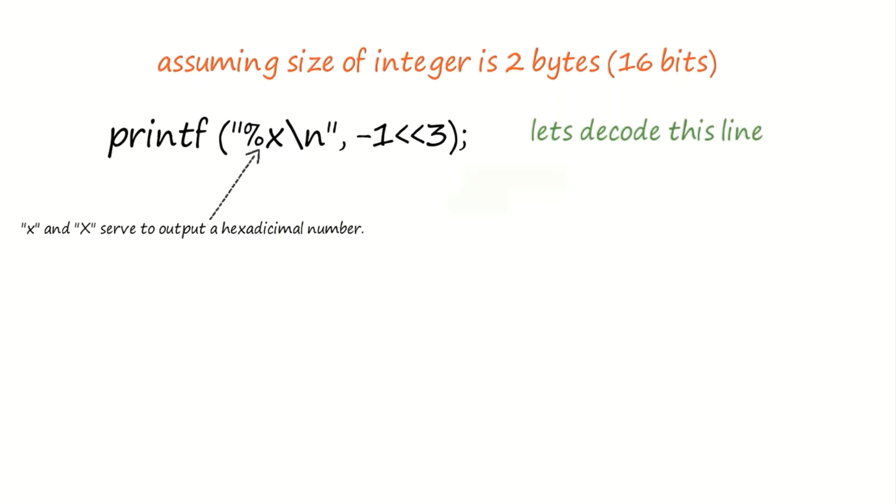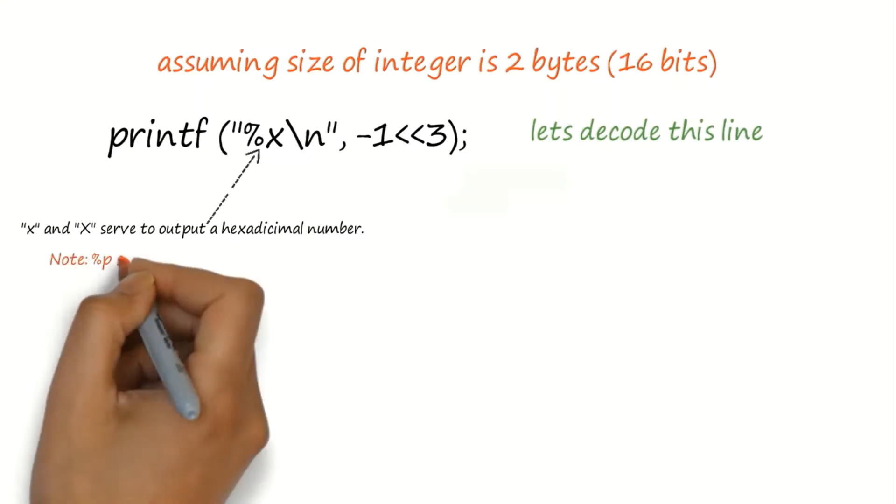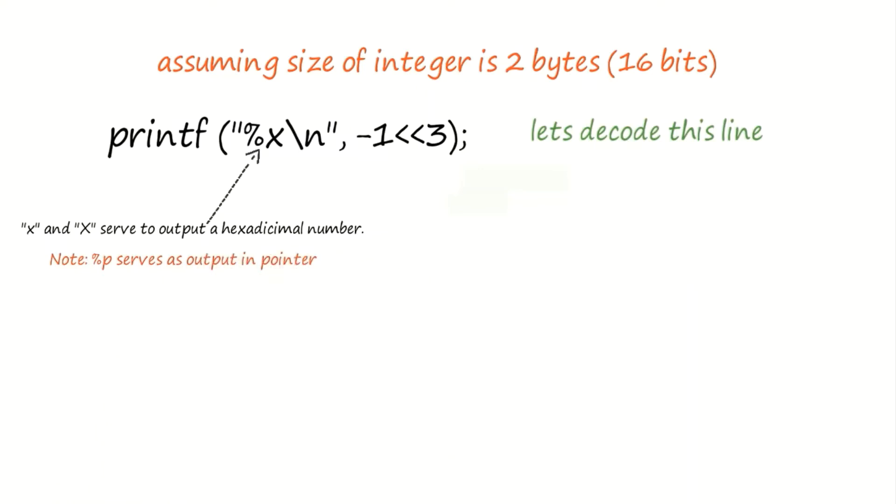If %x is given where x is in lowercase, it denotes lowercase alphabet representation. On the other hand, capital X represents uppercase alphabet representation.